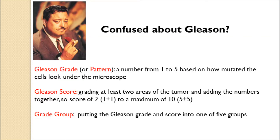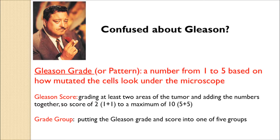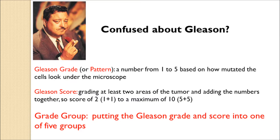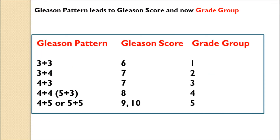To clarify: the Gleason grade or pattern is simply a number from 1 to 5 based on how mutated the cells look under the microscope. The Gleason score is graded twice and the numbers added to generate a score between 2 and 10. Recently, the Grade Group was introduced to return to just five categories: a Gleason score of 5 or lower is essentially ignored; Gleason 6 is Grade Group 1; 3+4 is Grade Group 2; 4+3 is Grade Group 3; and scores of 8–10 are Grade Groups 4 and 5.